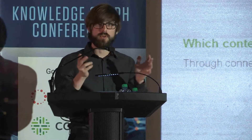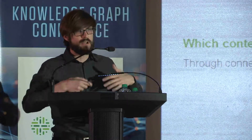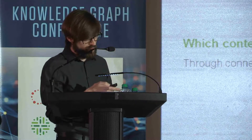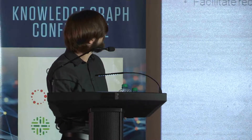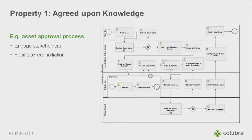I'm going to give three properties of these context graphs, though as we innovate and do more research, we'll probably end up with many more. The first is agreed-upon knowledge. I keep hammering on this because the underpinning vision of Collibra is that there is value in contextualizing information based on social agreements about what we mean with certain terms in a company. As was alluded to yesterday, people might not even agree on what they mean with the term 'customer.'